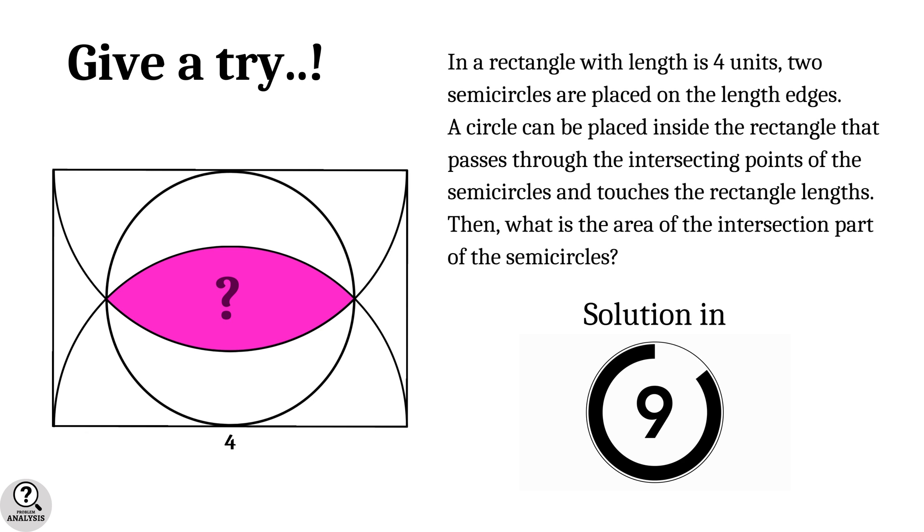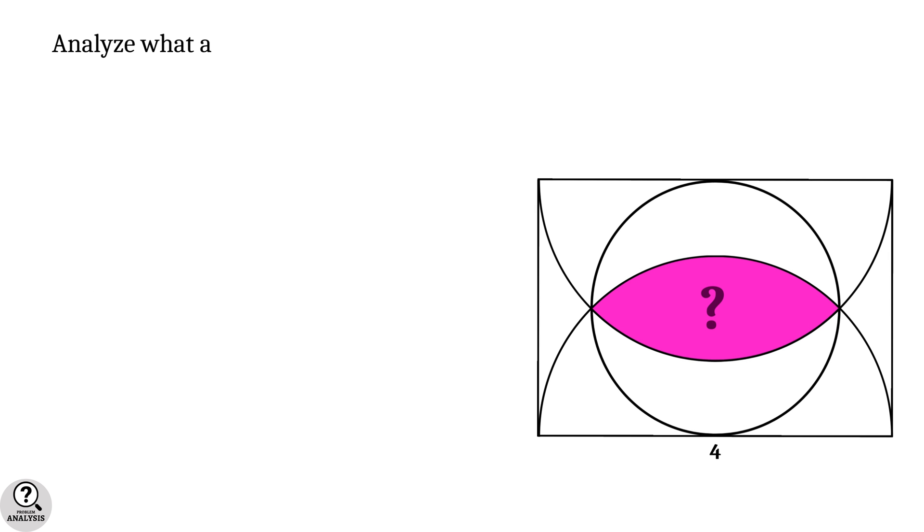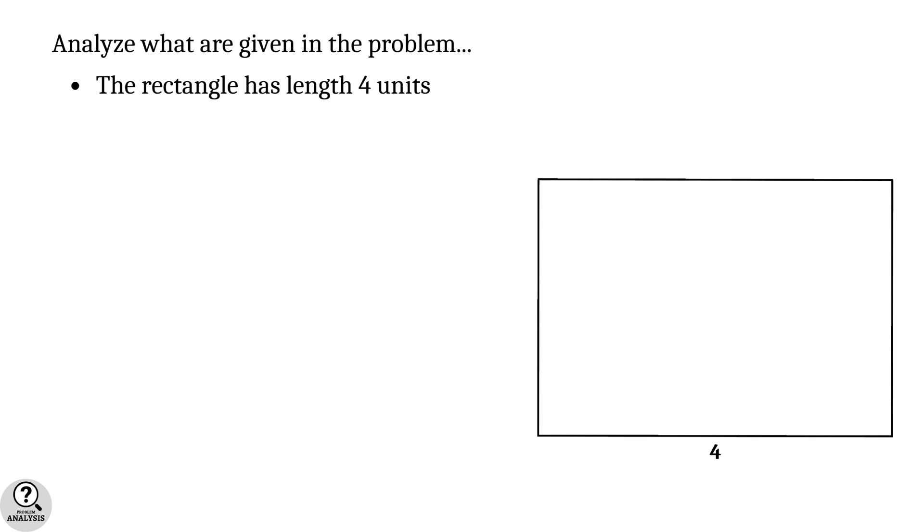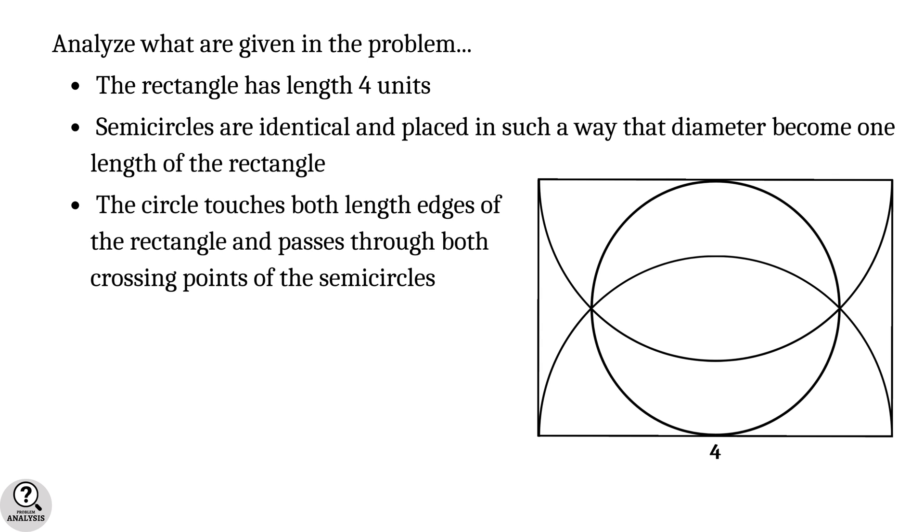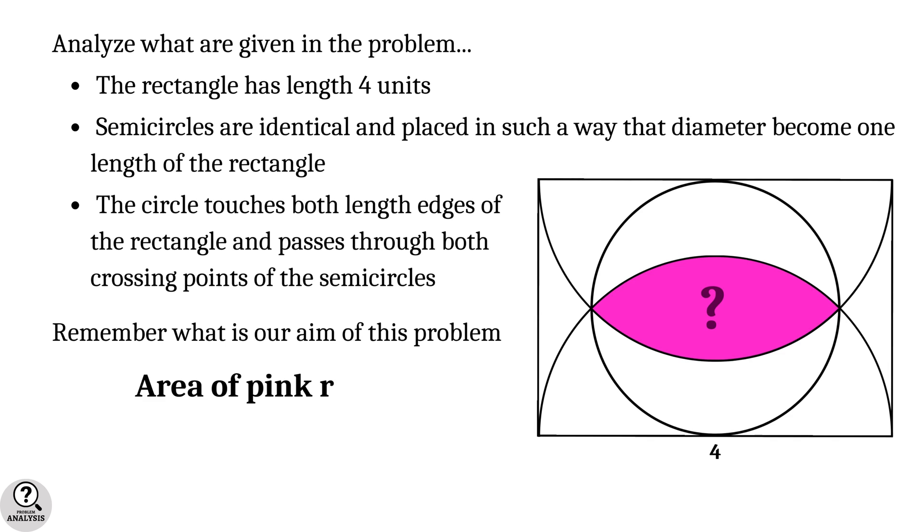First, let's analyze what are given in the problem. First of all, the rectangle has length four units. Secondly, the semicircles are identical and placed in such a way that each diameter becomes one length of the rectangle. And finally, the circle touches both the length edges of the rectangle and passes through both the crossing points of the semicircles. Now remember, what is our aim of this problem? It is nothing but to find the area of the pink shaded region.